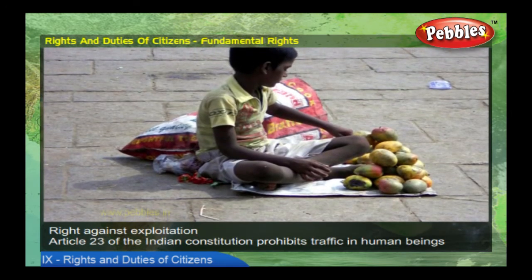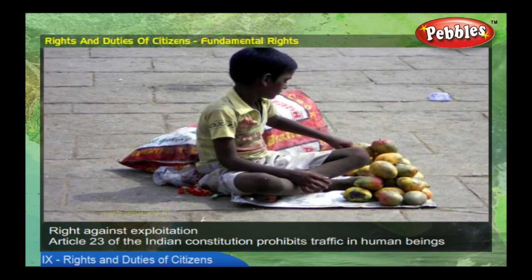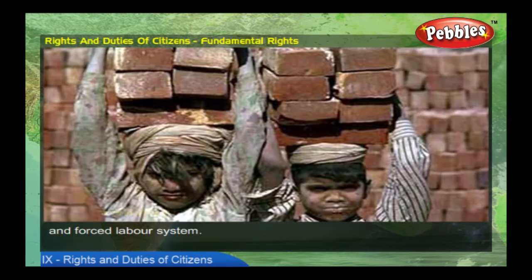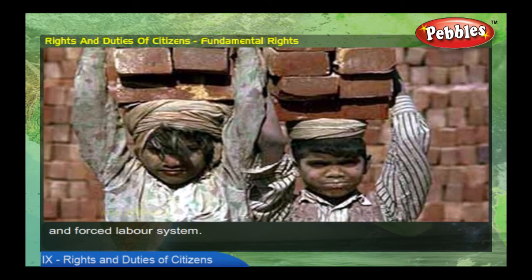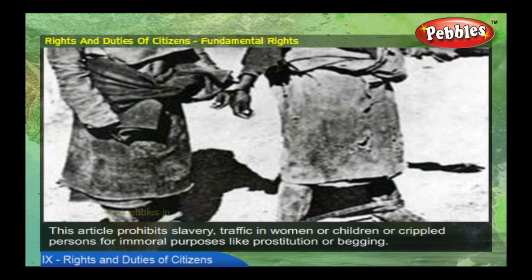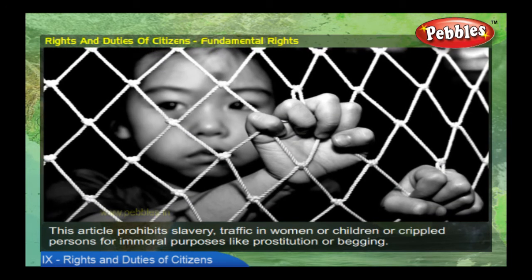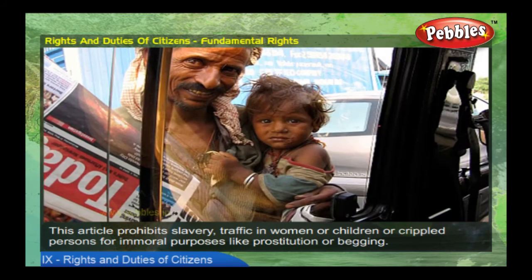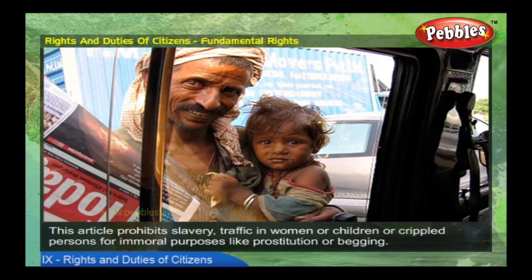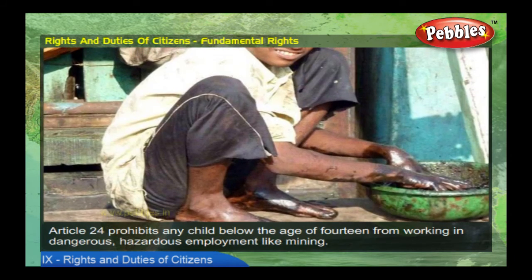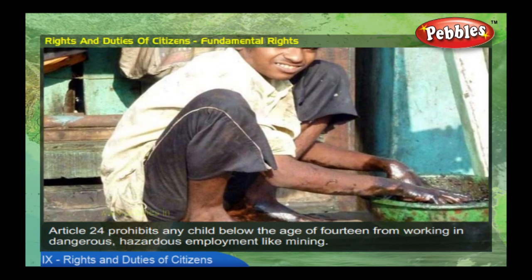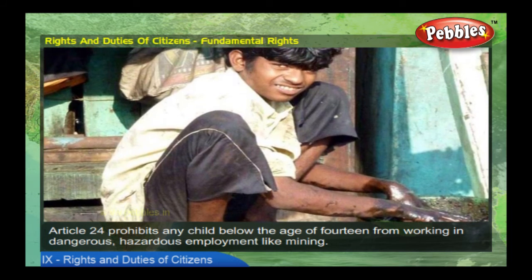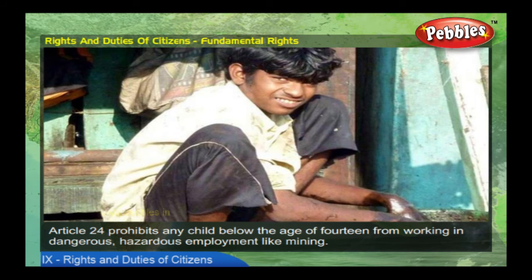Right against exploitation: Article 23 of the Indian constitution prohibits trafficking in human beings and the forced labour system. This article prohibits slavery and traffic in women, children, or crippled persons for immoral purposes like prostitution or begging. Article 24 prohibits any child below the age of 14 from working in dangerous or hazardous employment like mining.